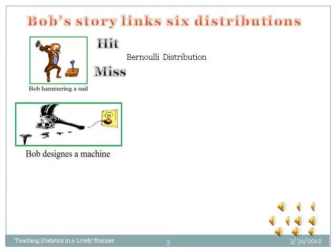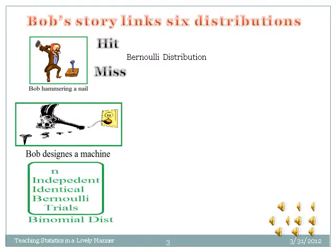Bob successfully joined the company Trust Our Nailers. Bob felt that machines are faster than humans, so he designed a machine to fix nails. The machine is given n — say 10 — nails to hit. A few nails will be fixed, others will bend. Fixing a nail is a success and bending a nail is a failure. Each attempt by the machine is a Bernoulli experiment; all trials are independent and identical, and the probability of success remains constant from trial to trial. Such an experiment is called a binomial experiment. We say the random variable x follows the binomial distribution with parameters n and p.